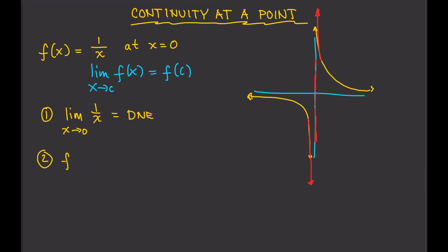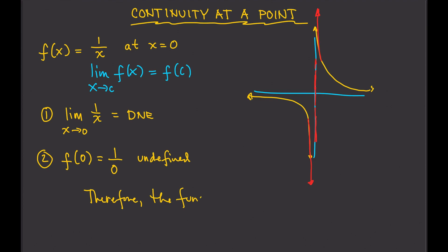For f(0): that gives 1/0, which is also undefined. So the limit does not exist and f(0) is undefined. Therefore, f(x) = 1/x is not continuous at x = 0.